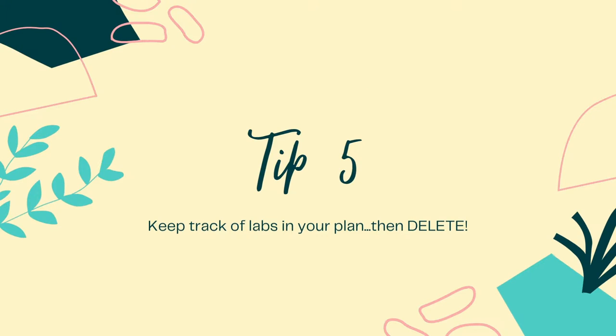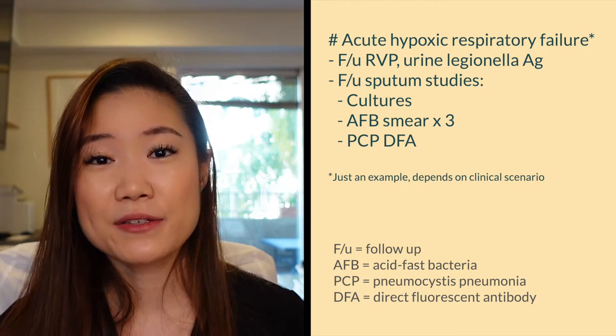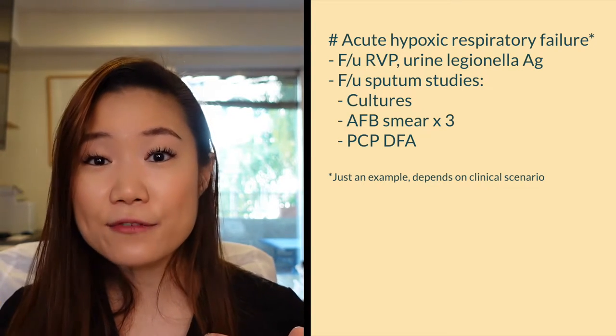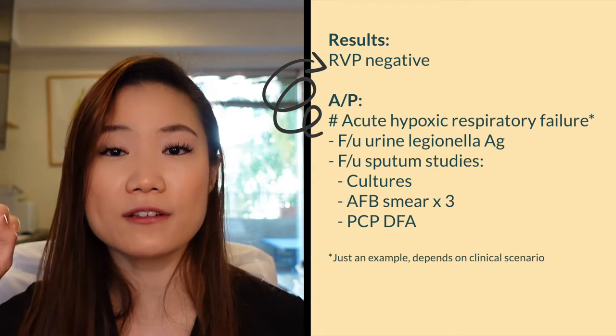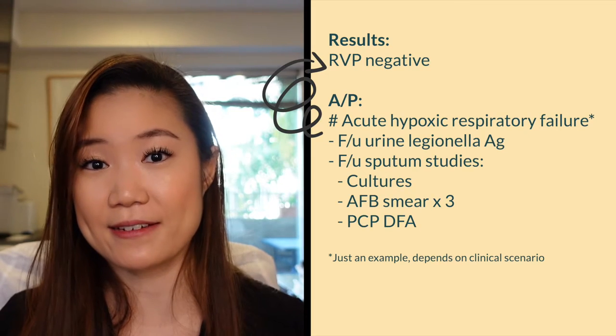Tip number five: keep track of labs that take time to come back in your plan, and delete them when the results actually return. For example, if a patient is immunocompromised and comes in with acute hypoxic respiratory failure, you'll send many labs that take days to come back. List them in your plan so you remember to check during pre-rounding. Once a result comes back, move it to your results section and remove it from the plan, so no one thinks it's still pending. Keeping it updated daily shows high attention to detail.